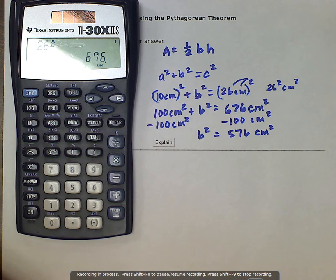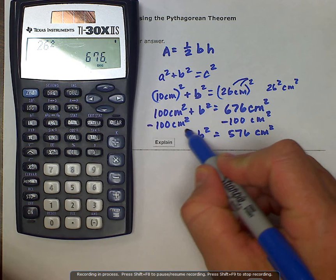Well, to find b then, we have to take the inverse operation of squaring something, which is the square root.